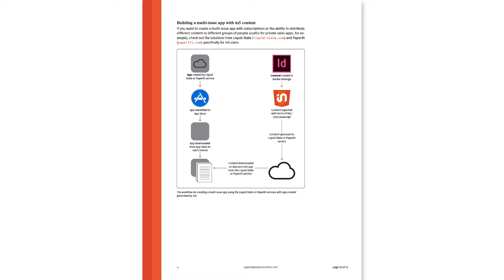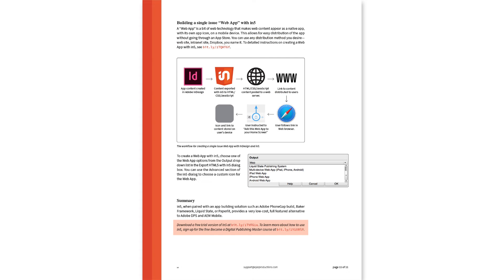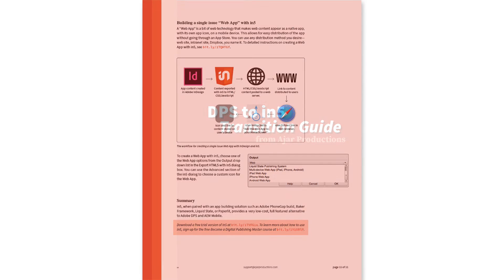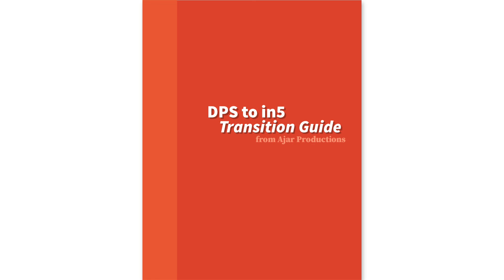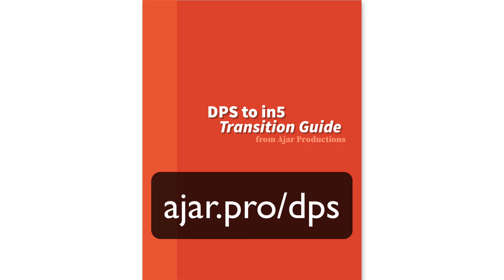It has strategies for creating the app at the end, because N5, unlike DPS, doesn't create an app. It creates HTML content from InDesign without you having to code, and then you can take that and package it into an app. So if you're interested in publishing digitally, and you are familiar with DPS or AEM Mobile, and you want to see how you can keep using those tools even though Adobe has discontinued them, take a look at this guide, and hopefully you'll find it helpful. You can find the guide at the link on screen or in the description.